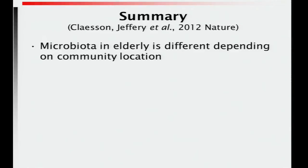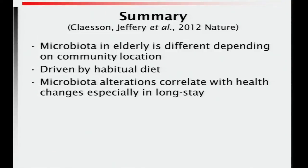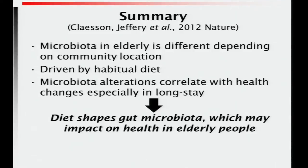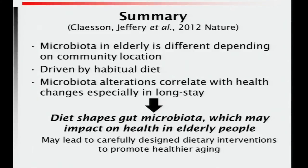In summary, the microbiota in the elderly is different depending on community location, and this is driven by habitual diet. Microbiota alterations correlate with health changes, especially in the long-stay. The hypothesis is that diet shapes the gut microbiota, which may impact on health in elderly people, and we're hoping this leads to carefully designed dietary interventions to promote healthier aging.